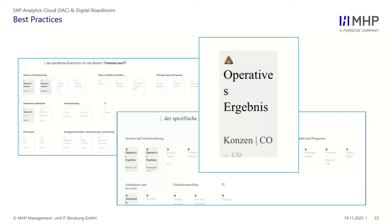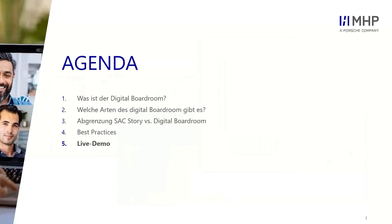Wir sind fest überzeugt, dass das besser wird. Wir haben Gespräche mit der SAP geführt, dass wenn ich eine Hausschrift nehme und die auf meinem Endgerät nicht vorhanden ist, diese wenigstens nicht Times New Roman wird, sondern vielleicht eine 72 Web oder eine DIN oder eine Futura – also eine nicht-Serifenschrift – damit man den Unterschied vielleicht nicht so vorfindet.